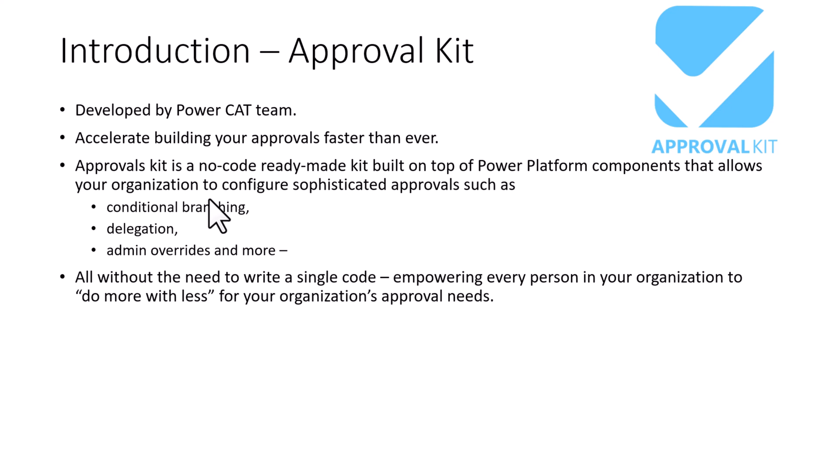This approval kit has been developed by Microsoft's Powercat team. Basically it accelerates the building of your approvals faster than ever. Now just imagine for an organization where you want a multi-stage approval process — for that in Power Automate you need to write your logic using different conditions and approval actions. But what if the person doesn't know anything about Power Automate and they want to configure and automate their business processes? The approval kit is a boon for low-code developers, providing a ready-made kit built on top of Power Platform components that allows your organization to configure sophisticated business approvals such as conditional branching, delegation, admin overrides, out-of-office, and much more — all without writing a single line of code.